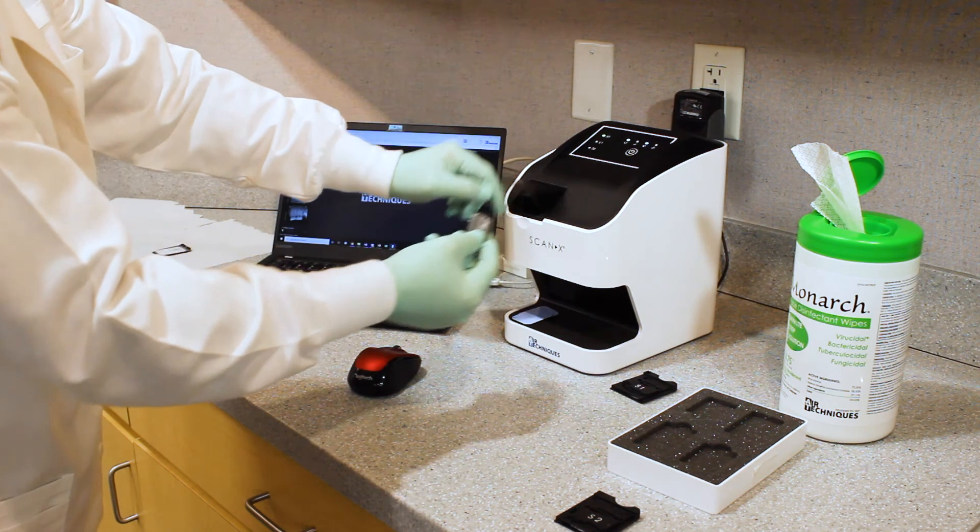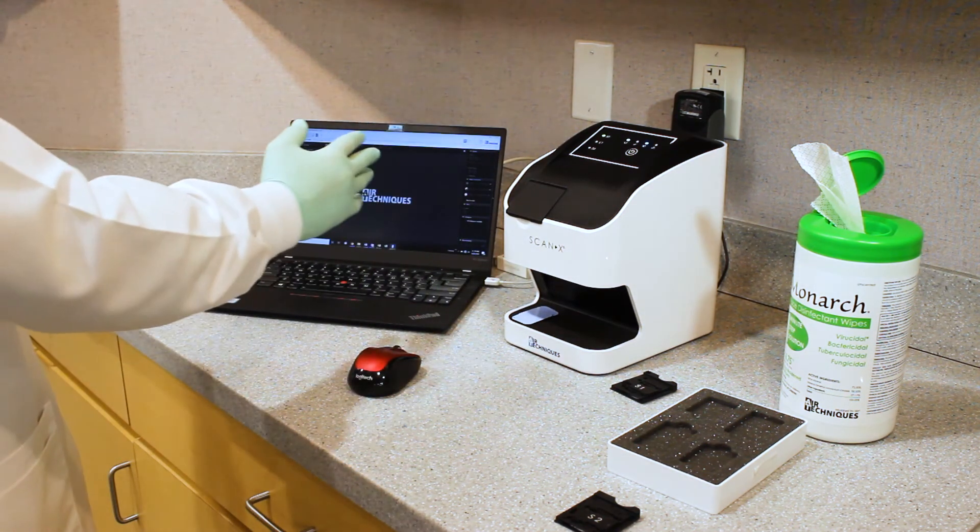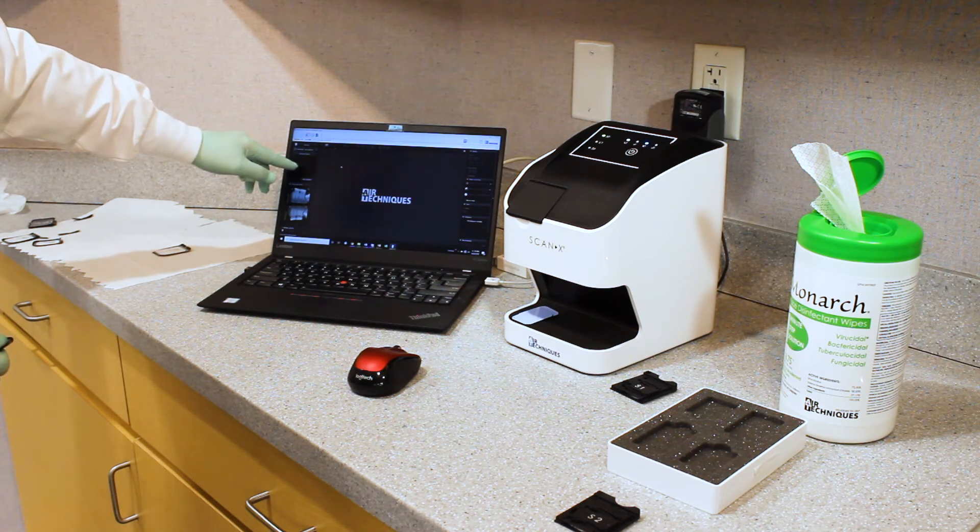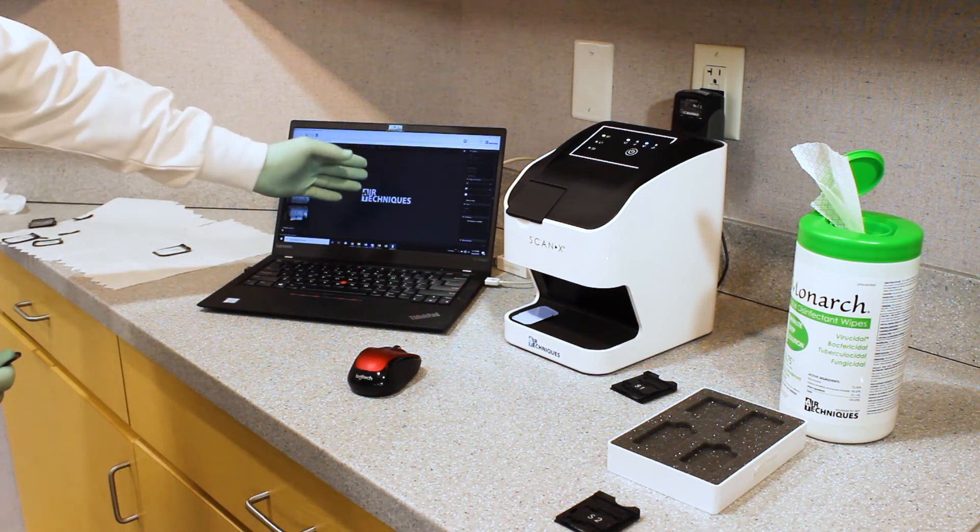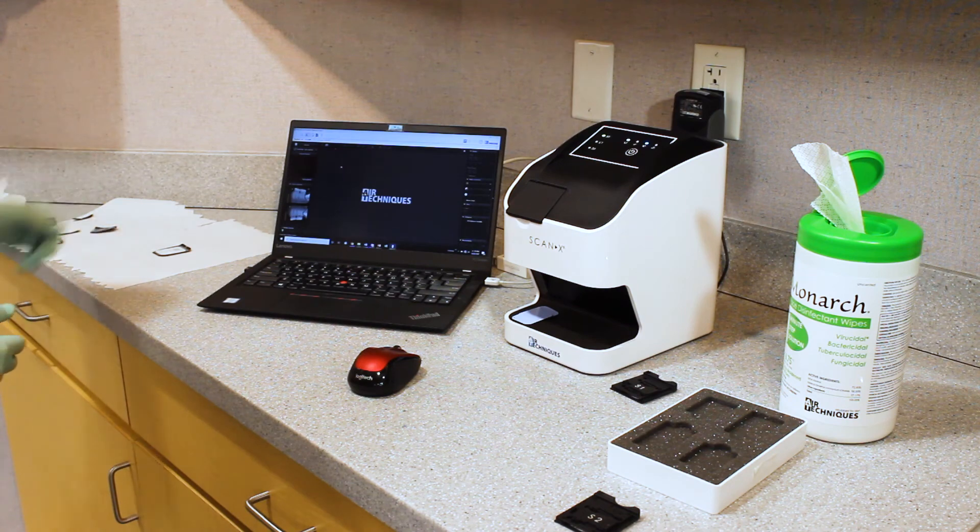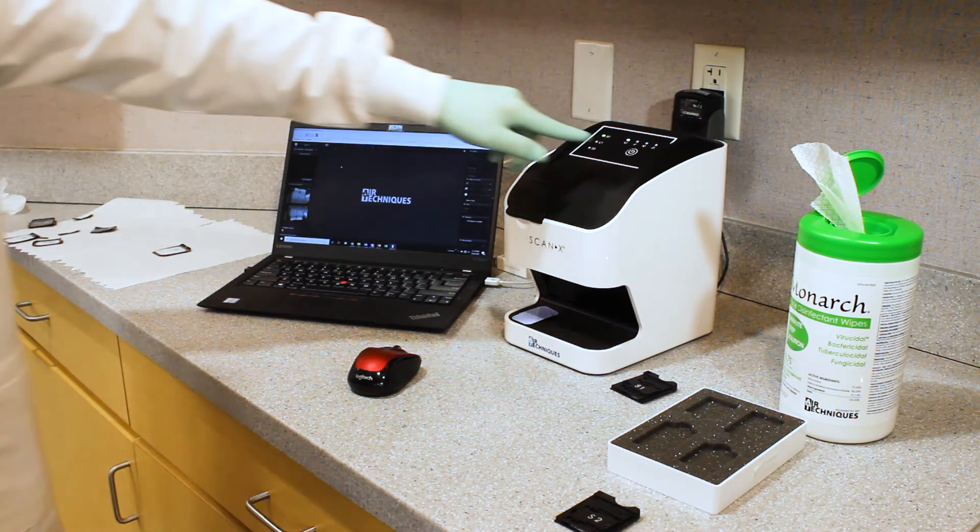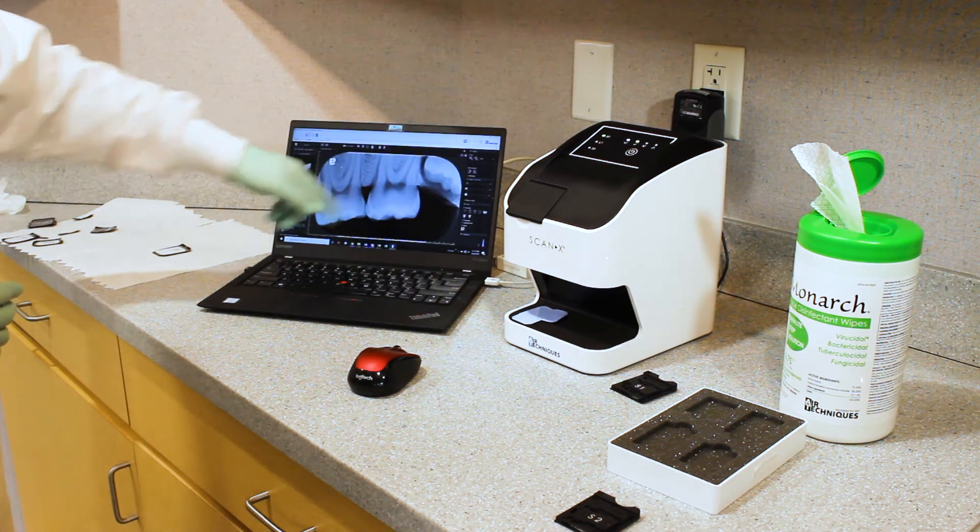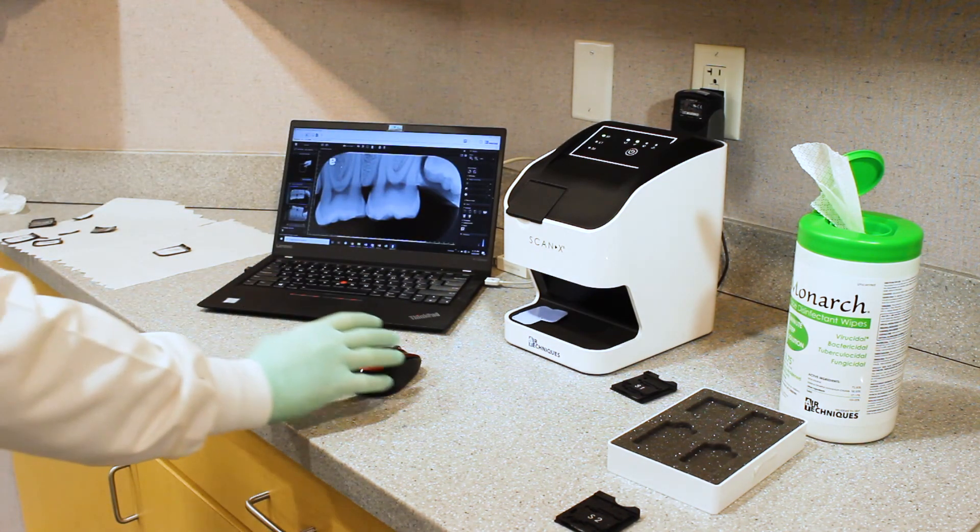While the barrier envelope does not go in, we close the flap. The machine is now scanning that size number zero phosphorus storage plate, as we see over here. And momentarily it will appear on screen. The LED indicators are telling us the status of the machine. So that is our size number zero that has just been acquired.